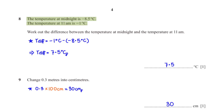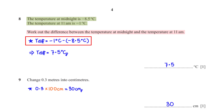The temperature at midnight is negative 8.5 degrees Celsius. The temperature at 11 am is negative 1 degree Celsius. Work out the difference between the two temperatures. To get the difference we subtract the initial temperature, negative 8.5 degrees Celsius, from the final temperature, negative 1 degree Celsius. This is equal to 7.5 degrees Celsius.